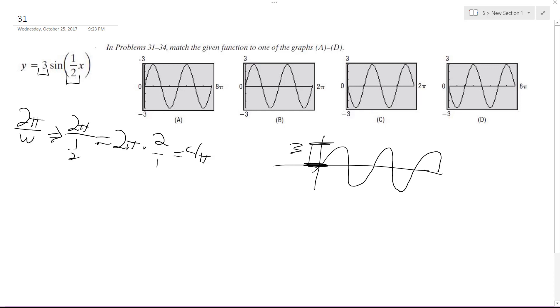So if we look here, the first graph has an amplitude of 3 and split in half it goes to 8π, so one cycle is 4π. So it's going to be part A.